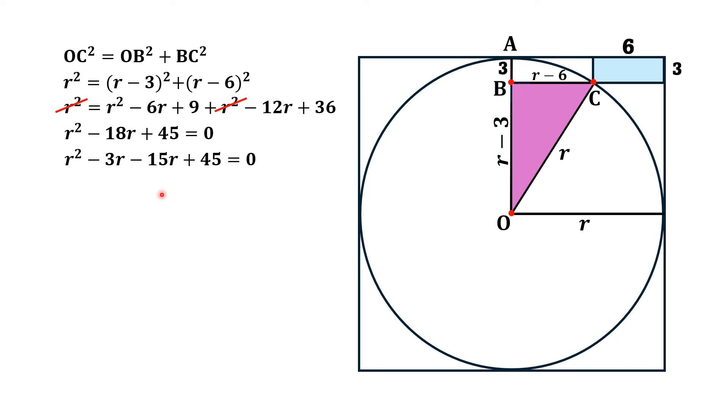Factorizing this one, we can break the middle term -18r as -3r - 15r. Taking r common from the first two terms and -15 common from the last two terms, we get r(r - 3) - 15(r - 3) = 0, which gives (r - 3)(r - 15) = 0.